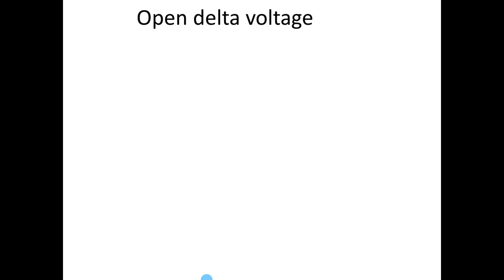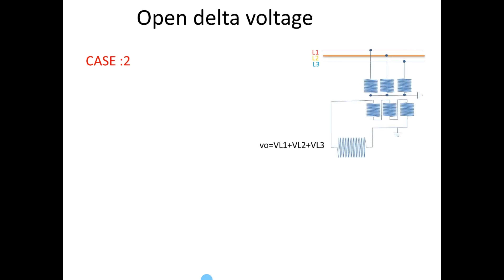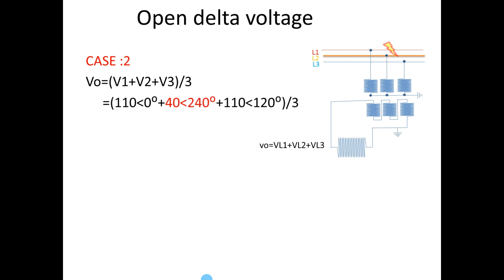Now I go for Case 2. Let us consider the fault on Y phase. During this time, depending on the fault current, the voltage will be dropped on Y phase. Let us consider the voltage on Y phase is 40V. The open delta voltage will be 23.3V at 60 degrees.